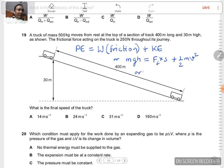M is 500 into 9.8 into the height which is 30 meters. This equals the frictional force 250 Newton into the distance through which it acts, which is 400 meters, plus 1/2 the mass, which is again 500, into V squared.